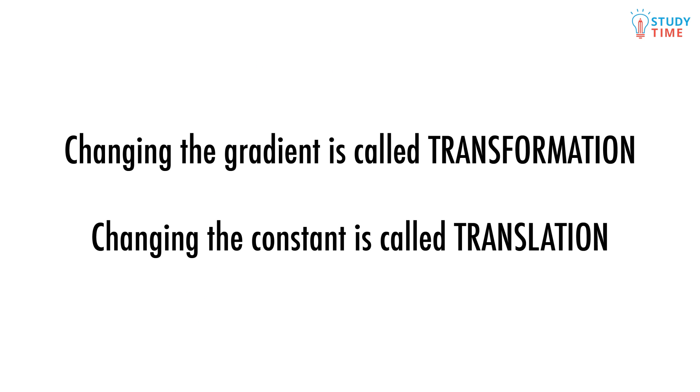Changing our gradient is what is known as a transformation because it changes the shape of the graph. Changing the constant for the y-intercept is known as translation because all it does is move the graph up and down.